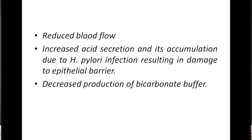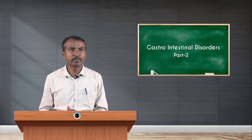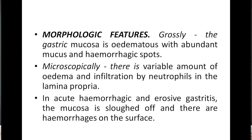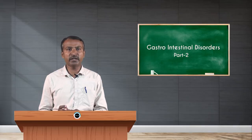H. pylori infection results in damage to the epithelial barrier and decreased production of bicarbonate buffering. Morphologically, grossly the gastric mucosa is edematous with abundant mucus and hemorrhagic spots. Microscopically, there is a variable amount of edema and infiltration by neutrophils in the lamina propria. In acute hemorrhagic and erosive gastritis, the mucosa is sloughed off with hemorrhages on the surface.